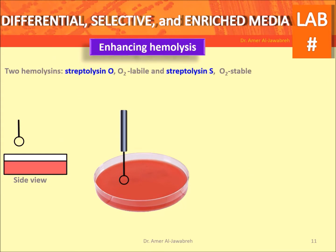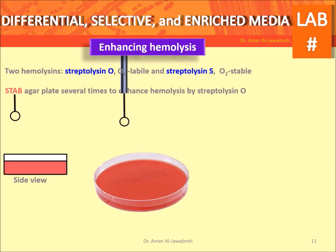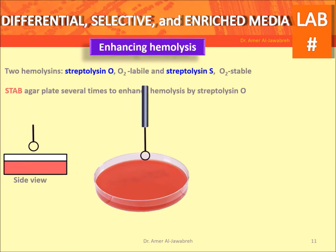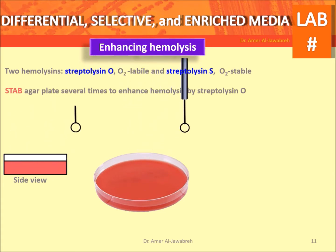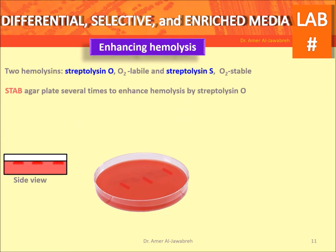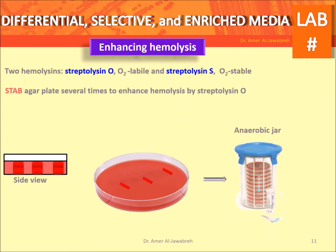Enhancing hemolysis. Hemolysins: streptolysin O — oxygen labile; streptolysin S — oxygen stable. Stab the agar plate several times to enhance hemolysis by streptolysin O.